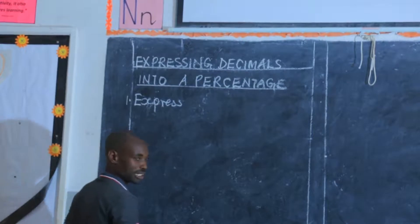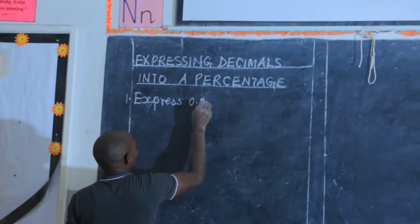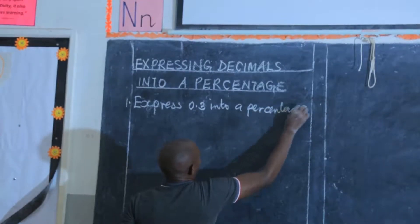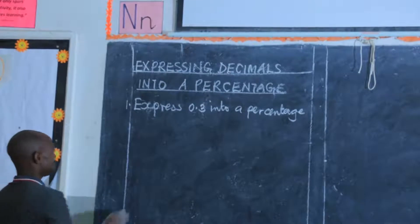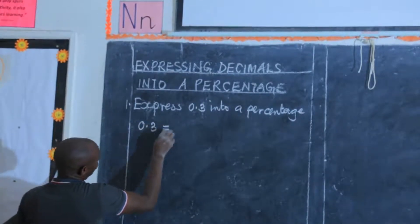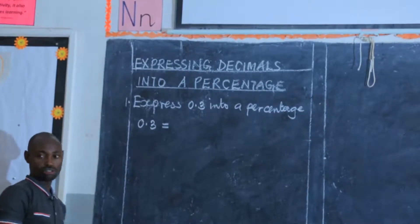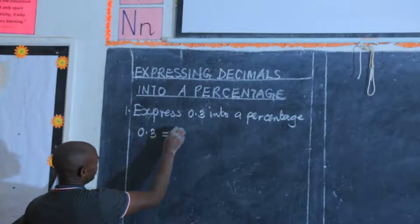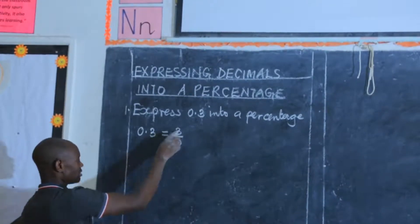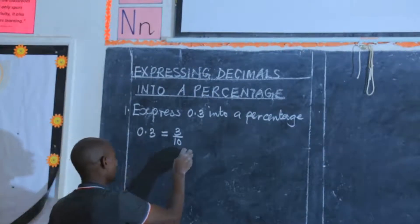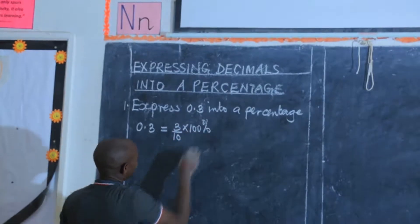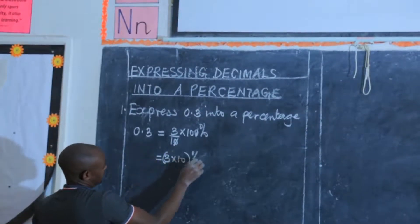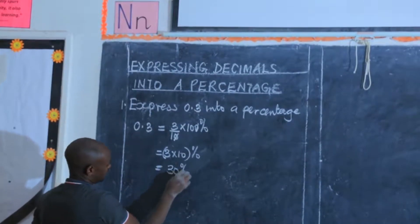Someone is suggesting 0.3 — express 0.3 into a percentage. In order to express this as a percentage, you should first change it into a common fraction. 0.3 in fraction form is 3 out of 10. Having got 3/10, we multiply by 100%: cancel the 10 with the 100, remaining with 3 times 10, giving 30 percent.